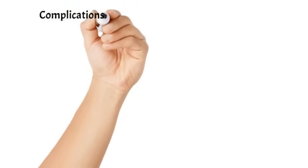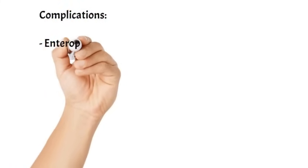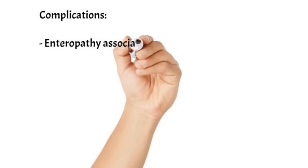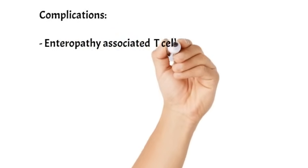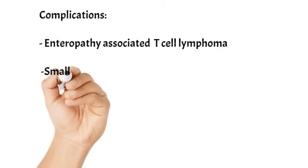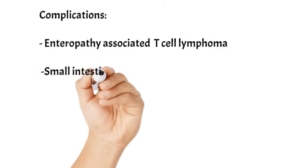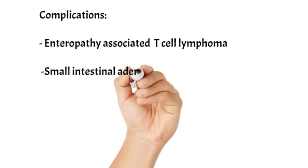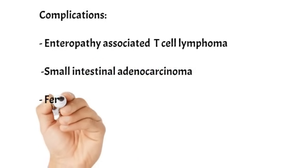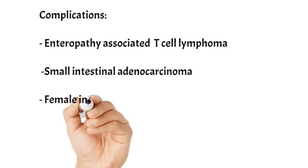Coming to the complications, common complications observed in various studies are enteropathy-associated T-cell lymphoma. Small intestinal adenocarcinoma may also be associated. Some studies have revealed that female infertility and osteoporosis are also linked to celiac disease.